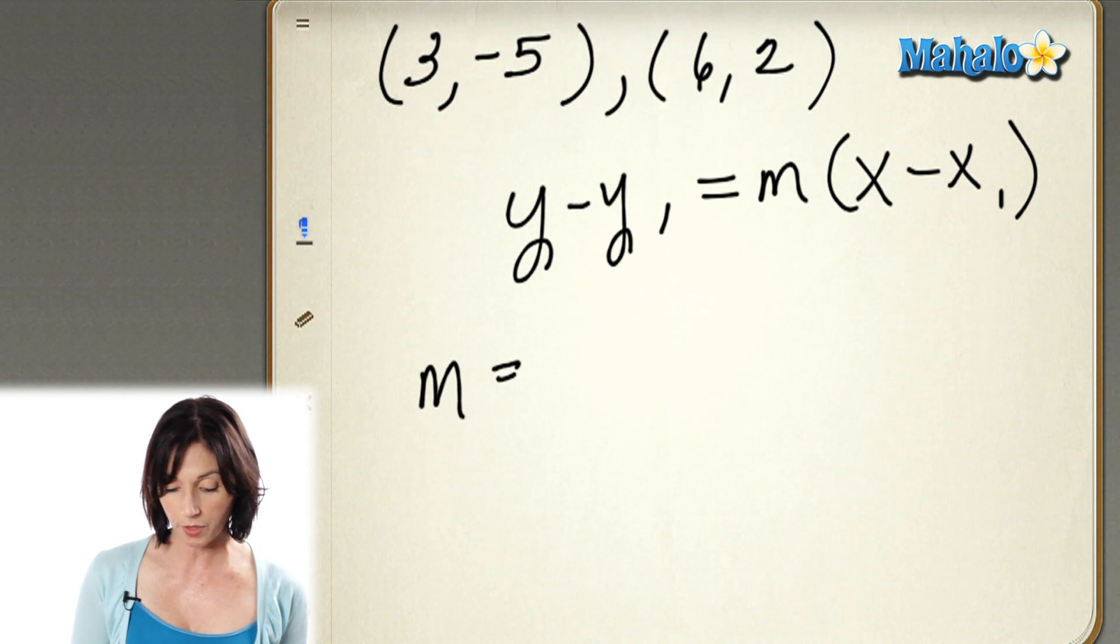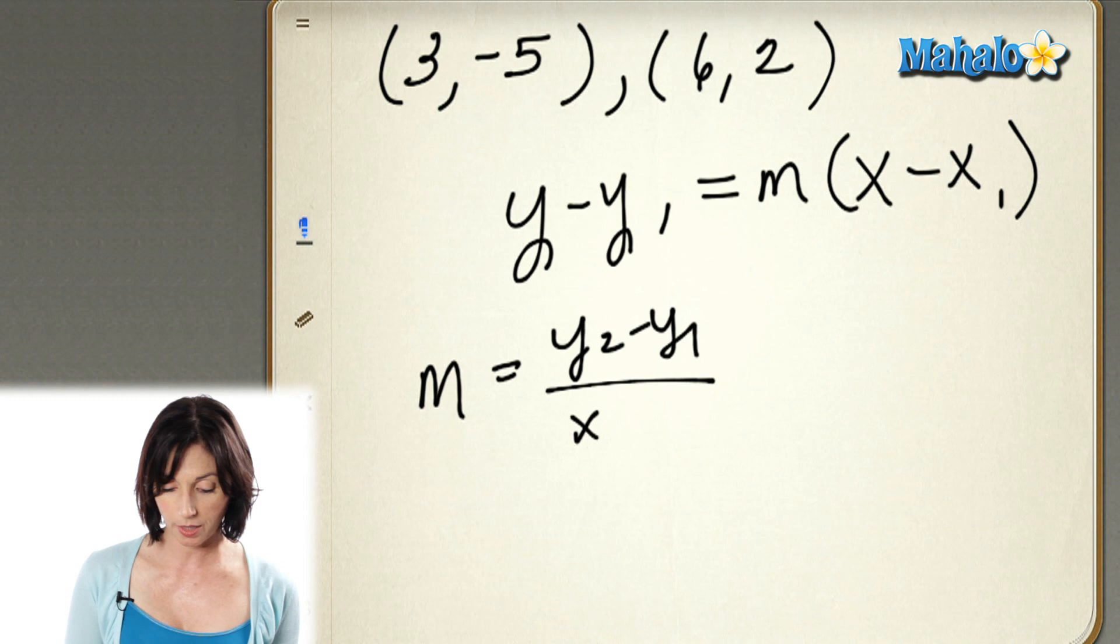So here's what you do. The first thing you have to do is find the slope. And we use our points for that. So slope is the difference in the y coordinates over the difference in the x coordinates.